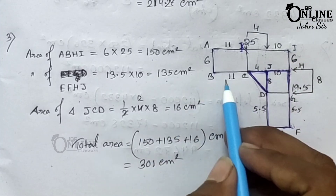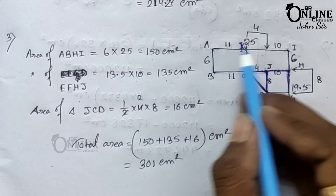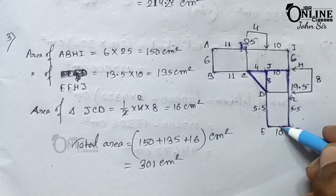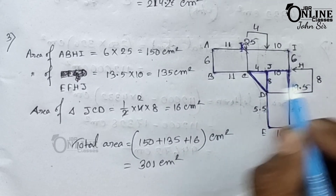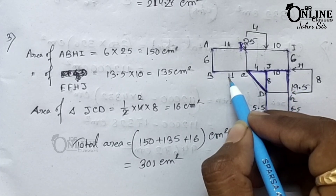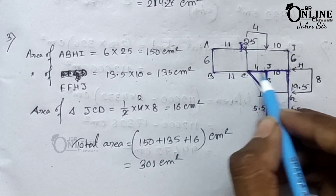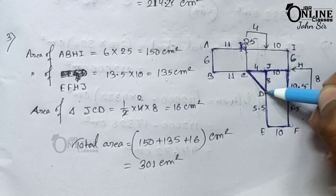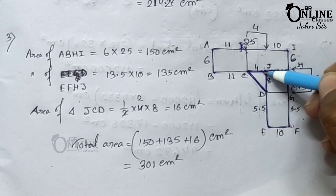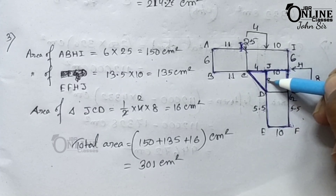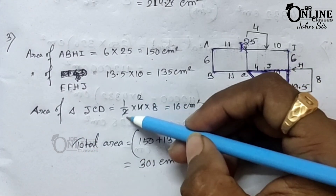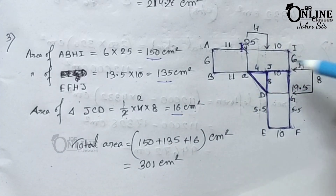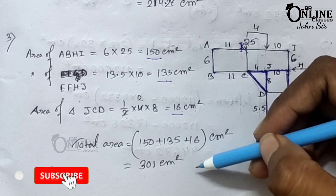Since AI equals 25, BC equals 11, and JH equals 10, the sum of BC and JH is 21. So CJ equals 25 minus 21, which equals 4 centimeters. In triangle DJC, height equals 8 and base equals 4. Area equals half times 8 times 4 equals 16 centimeters square. Adding all three areas gives the whole area of 310 centimeters square.